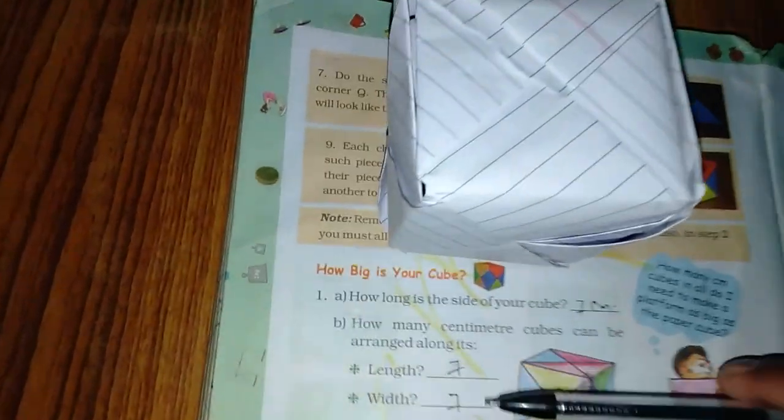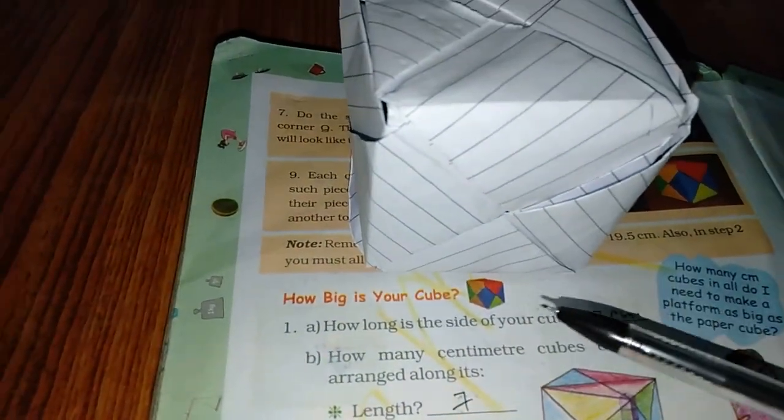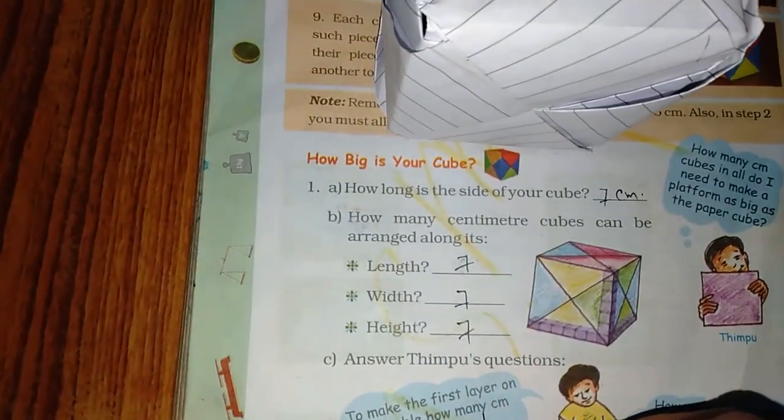Now, the lowest layer will come here. Seven into seven, how much will it be in total? 49.